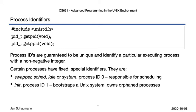Process ID 1 is traditionally known as init, and bootstraps the Unix system, creates all other processes, and reaps orphan processes, which we'll talk about in more detail in our next segment. Nowadays, there are alternatives to init that perform this function and may be assigned process ID 1 — most notably systemd, which you will find on several Linux systems.